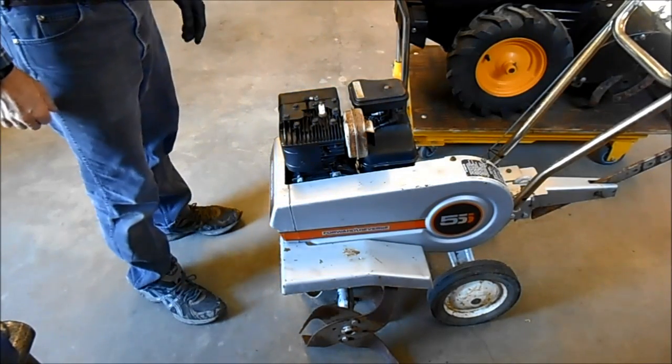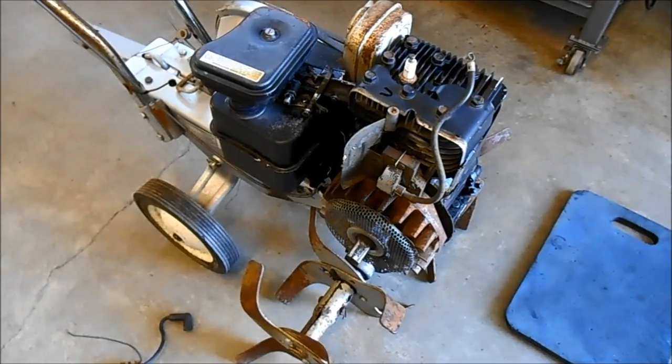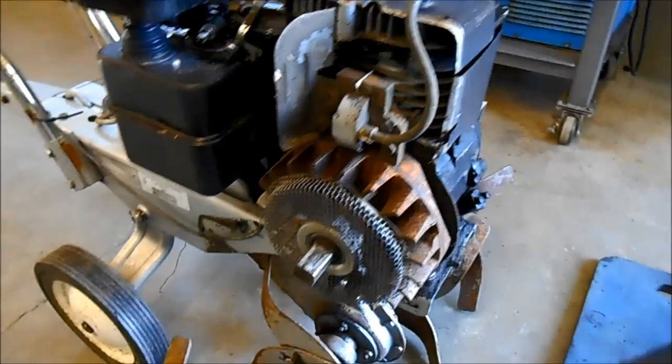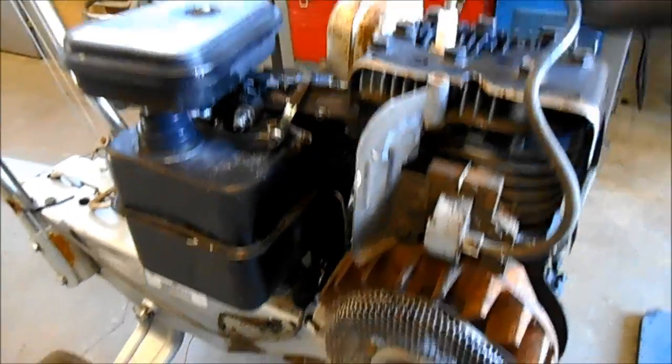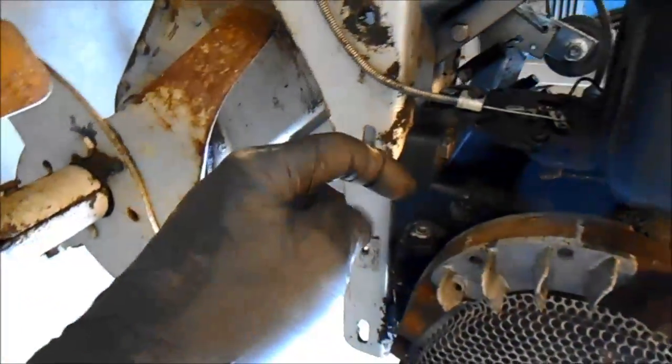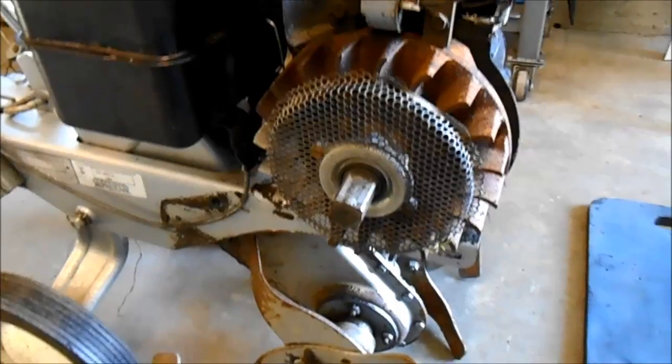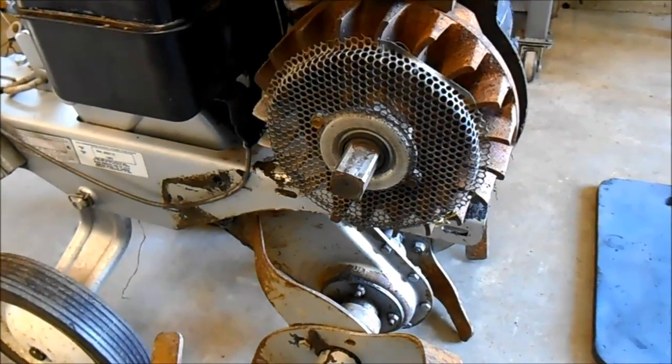So the next trick is to get this housing off. Okay guys, we have the cover off the motor. It was just three bolts. One, two, and three on this side right there. And the cover came off with the rewind. Excuse me, I've got to move you.